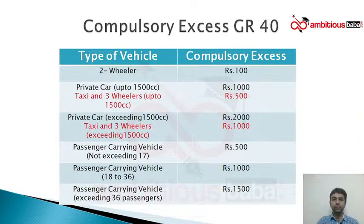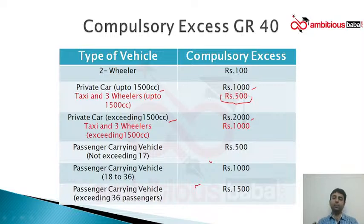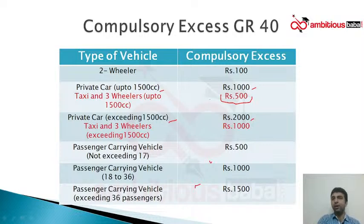Let's go to compulsory excess GR40 second part. Previously we covered private car up to 1500cc: 1,000 rupees excess, and private car exceeding 1500cc: 2,000 rupees. Today two new compulsory excesses are introduced. For taxis and three-wheelers up to 1500cc, the excess will be 500 rupees — exactly half of what it is for a private car. So if driving a private-number-plate Swift the excess is 1,000 rupees, and a taxi-number-plate Swift the excess is 500 rupees. For taxi, the excess is less; for private car, the excess is more.